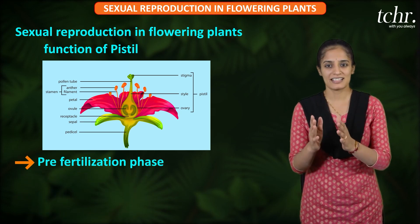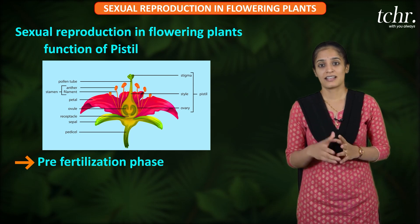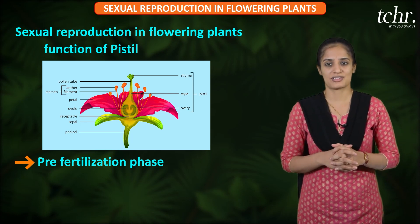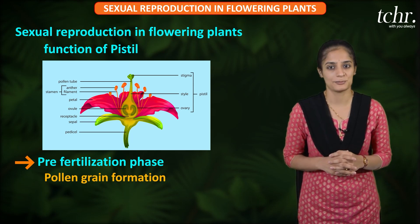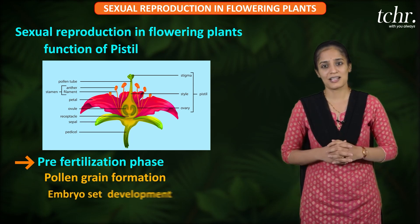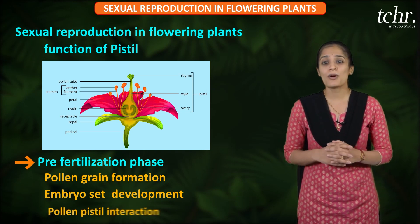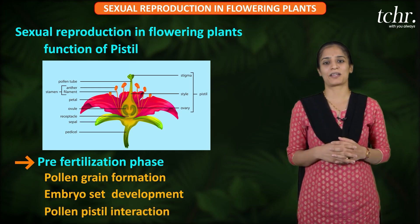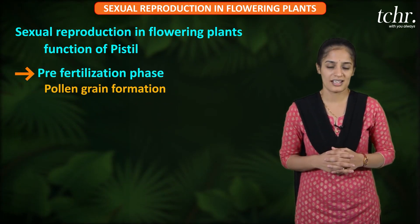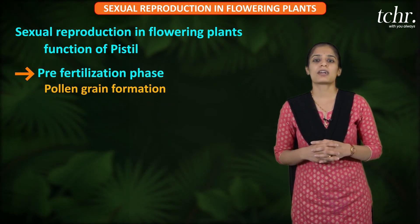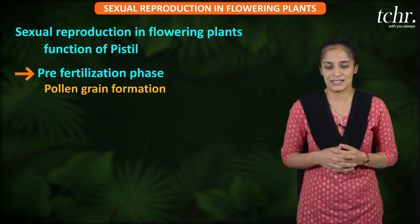Pre-fertilization events: first, pollen grain formation must occur. Second, embryo sac development must occur. Third, pollen-pistil interaction must occur. Now, coming to pollen grain formation — before development, you should have some meristematic tissues.